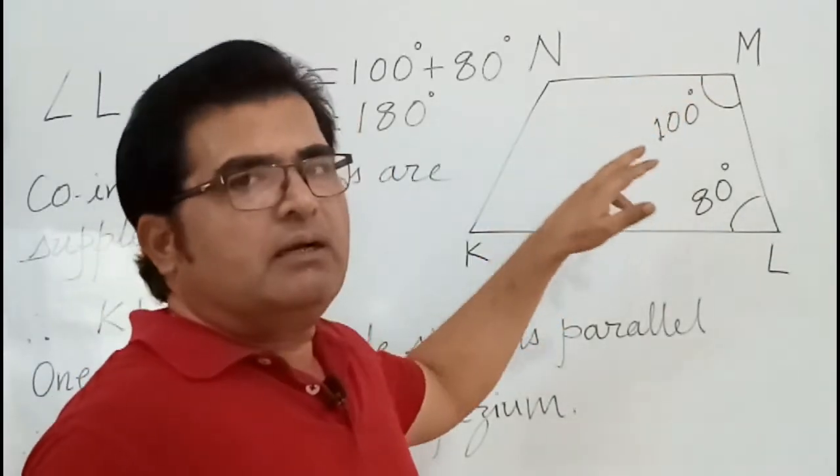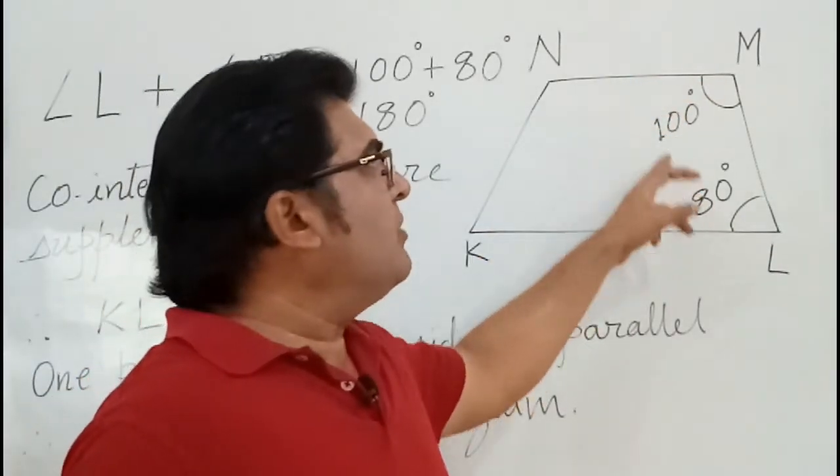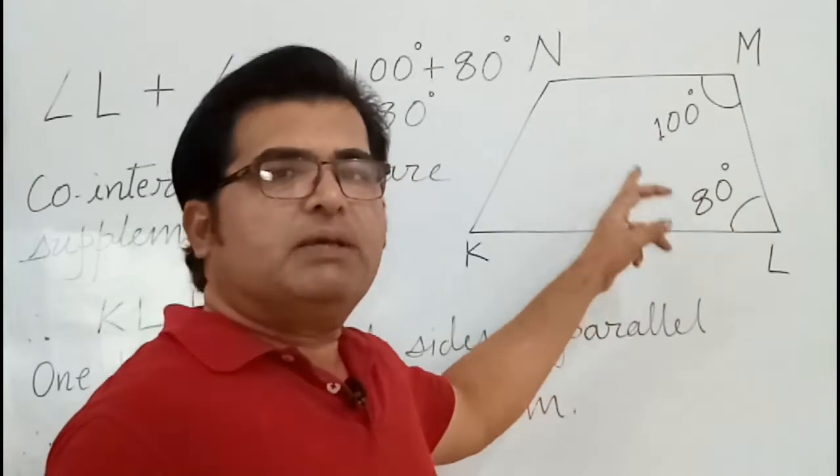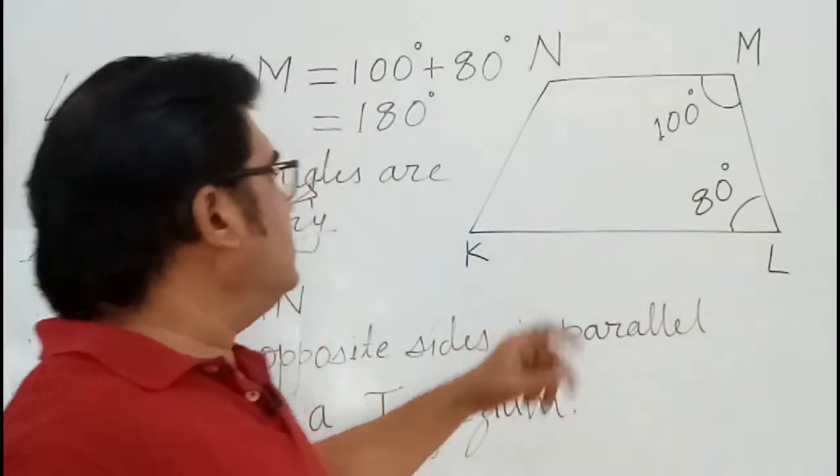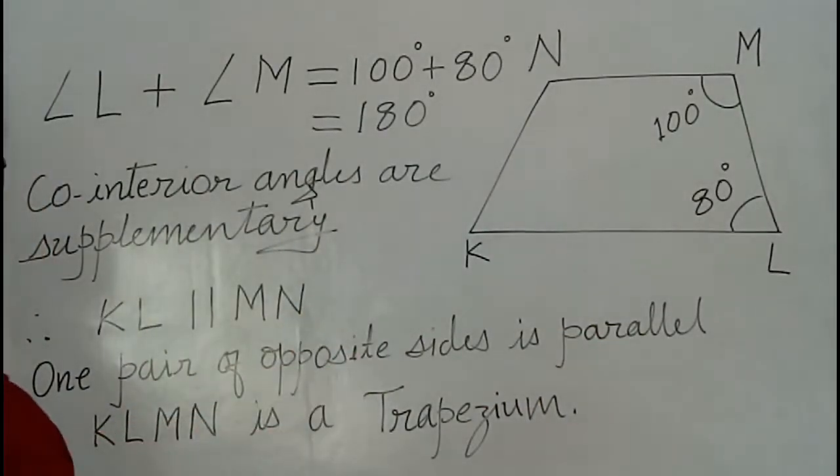These sides become parallel because the sum of co-interior angles is 180 degrees. So we can say that KL is parallel to MN.